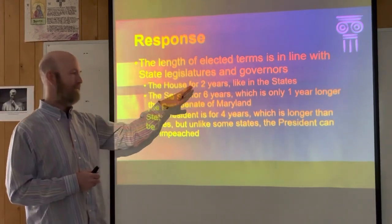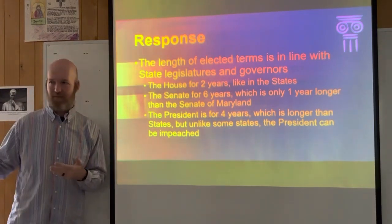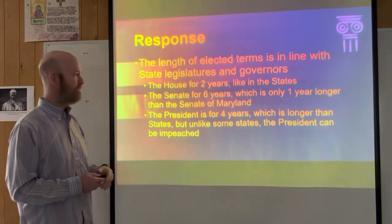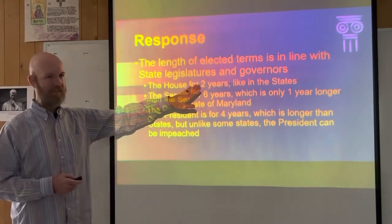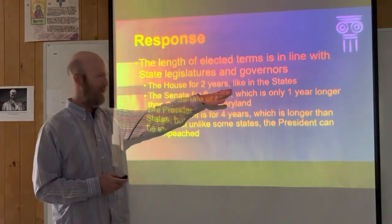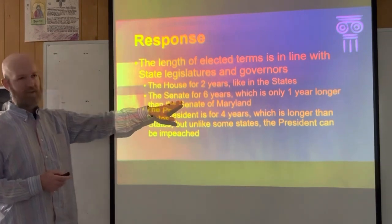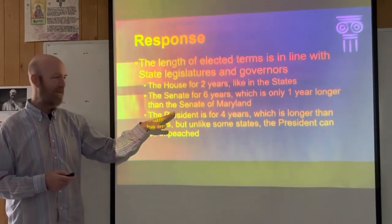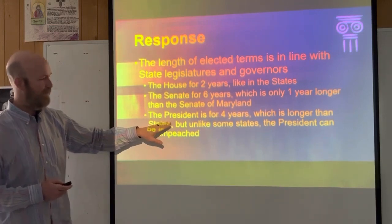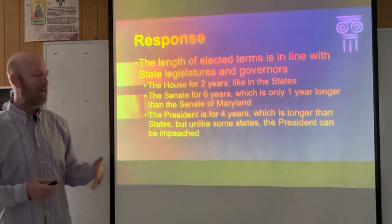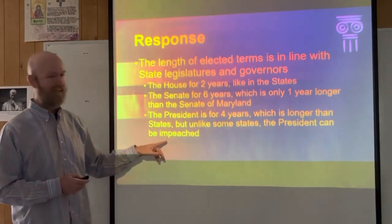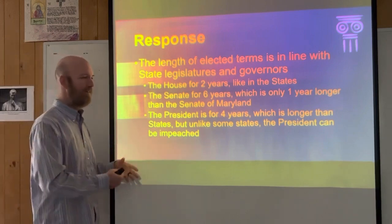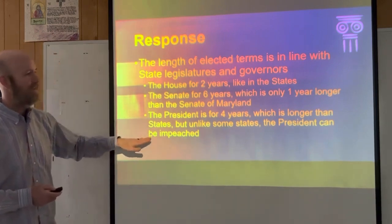They also addressed the length of terms for each elected person, comparing them to the states. House members are elected for two years, just like in all the states. Senators are elected for six years under the Constitution, which is longer than the states, but only one year longer than the Senate of Maryland. The president is elected for four years, which is longer than many state governors, but unlike some states, the president can be impeached, which keeps the president accountable.